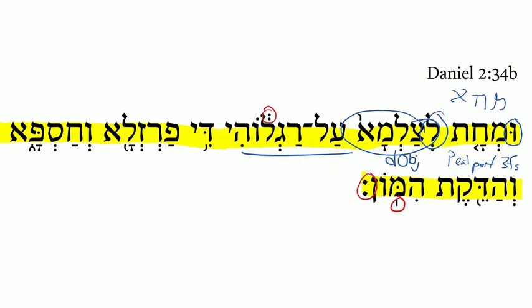Just as we've seen before, there's a pattern where the relative marker is going to stand between the part of the statue and what it's made of, so we see that again. The feet, which were of iron — of the iron and the clay — and that brings us to the atnach.